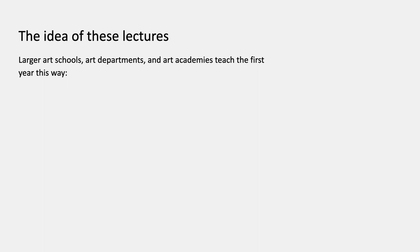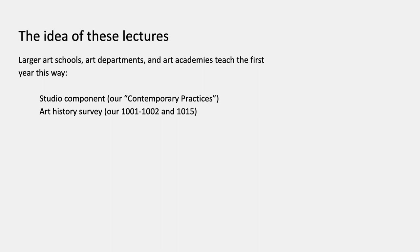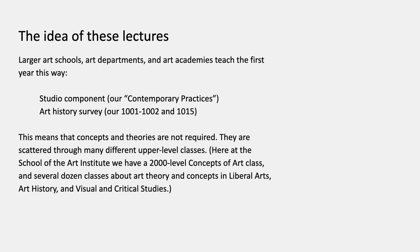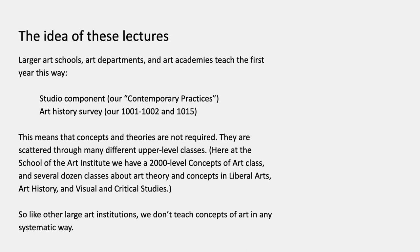On the other hand, larger art schools like the School of the Art Institute, art departments in universities, and art academies teach the first year more or less this way: you have a studio component, which at SAIC is called contemporary practices, and then you have an art history survey. That means concepts and theories aren't required at all — instead they're scattered through a number of different upper-level classes. Here at the School of the Art Institute, we have a 2,000-level concepts of art class, and there are a couple of dozen classes in an average year about art theory and concepts in departments like liberal arts, art history, and visual and critical studies.